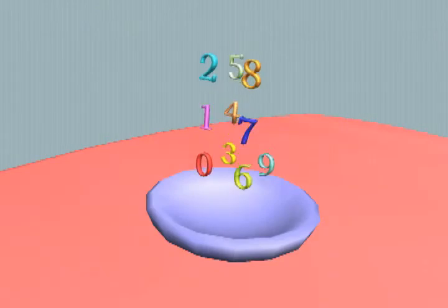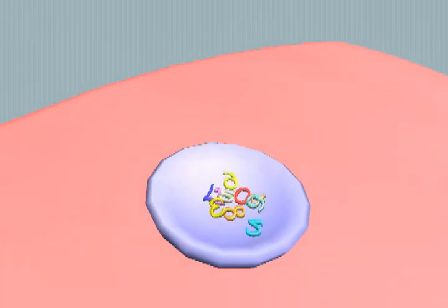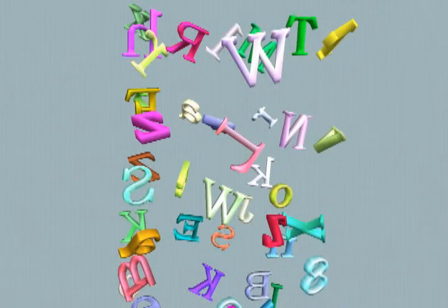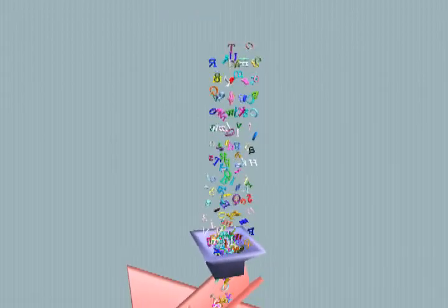When interpenetration occurs in rigid body simulation, the penetration depth is used to estimate the time of collision. In this rigid body simulation, 200 letters and numbers fall along a structure.